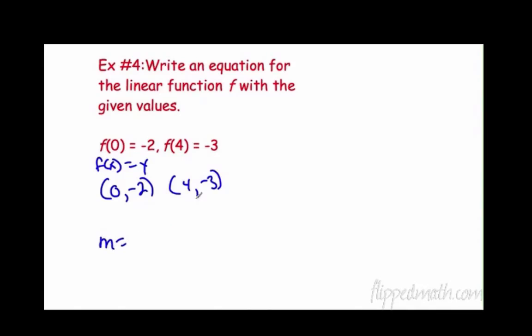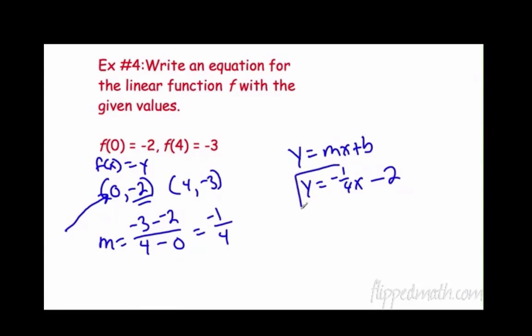And then everything is the same. We need to find our slope. So y2, negative 3 minus negative 2. x2 minus x1. Negative 3 minus negative 2 is negative 1. 4 minus 0 is 4. So our slope is negative 1 fourth. Plug it in. y equals mx plus b. So y equals negative 1 fourth x plus my b. I find when x is 0, my b is negative 2. So minus 2.